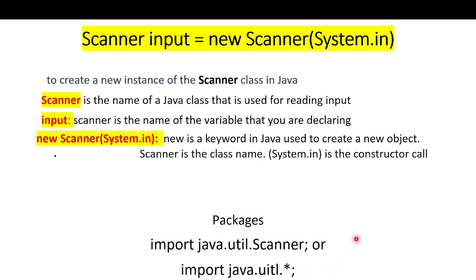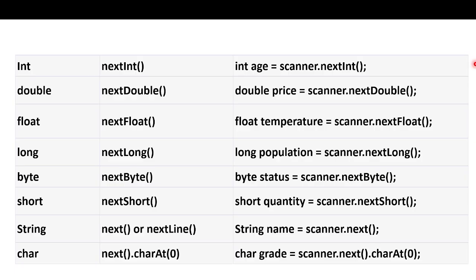So this is the general format. We have different data types: int, float, double, character, and string. If we want to use these methods, we can read from the user. For the int case, we need to use nextInt(). If we want to use int, the method letters like I, D, F, L, B are in capital letters, while 'next' is in small case.